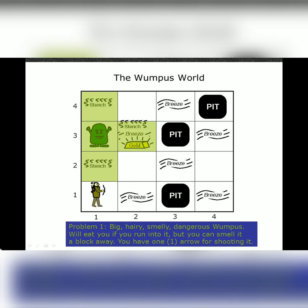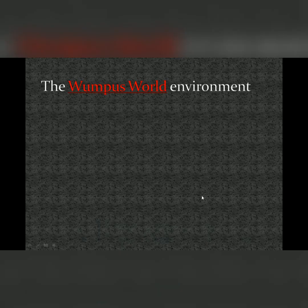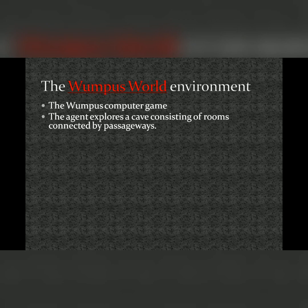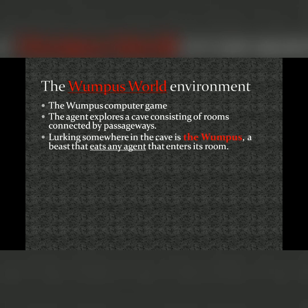Here I am showing you a picture in which there are 16 blocks — basically these are 16 different rooms in a cave. Each and every room is connected through a passage and there is darkness in each and every room. Wumpus World is a computer game and there is a knowledge-based agent which is the player in this game, exploring a cave consisting of 16 different connected rooms.